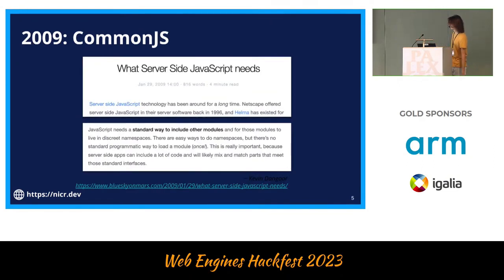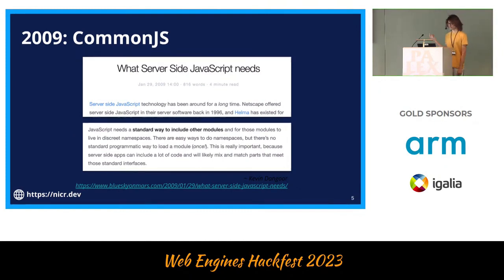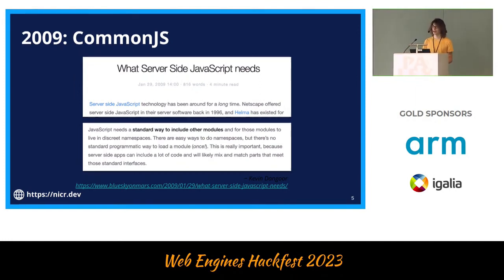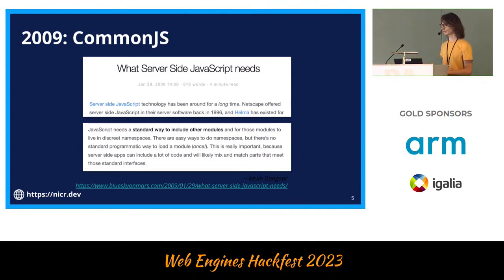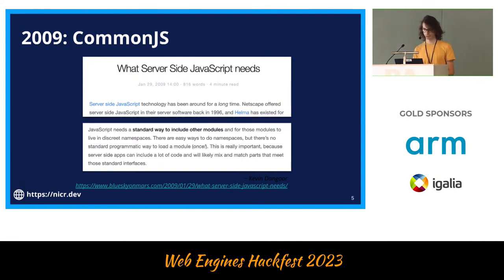Until when it was not fine anymore. Specifically for server-side JavaScript, applications started to become more and more complex. And in 2009, a group of people decided to work on what is now known as CommonJS. Fun fact: it was called ServerJS because this problem was only on the server and not on the client. There was a need for a standard way to load modules, to load other files, to load other code — namespacing them without just sticking everything in global scope to avoid conflicts.